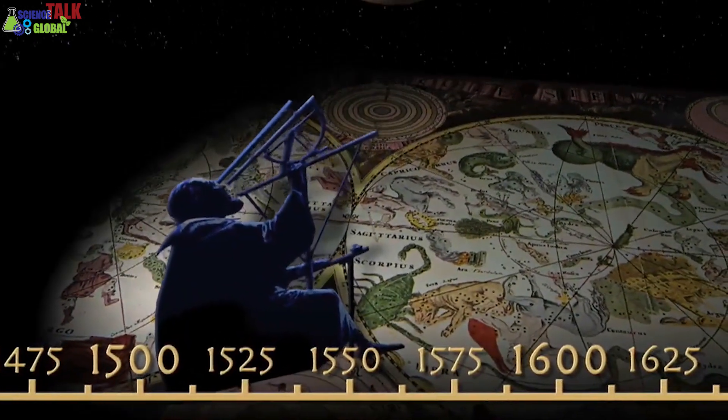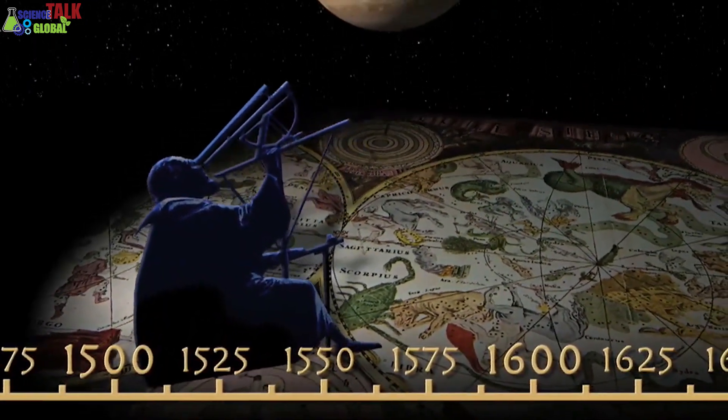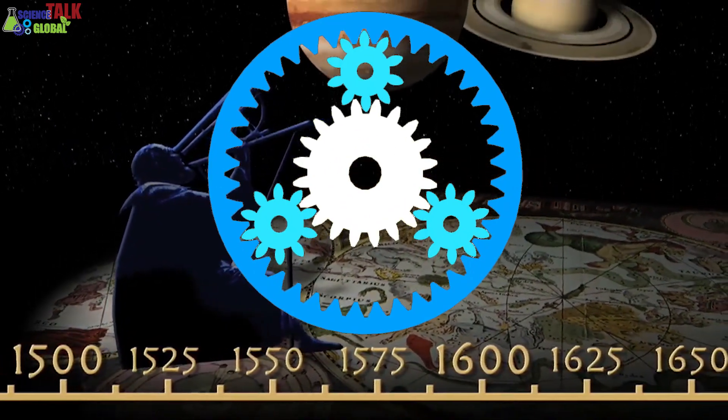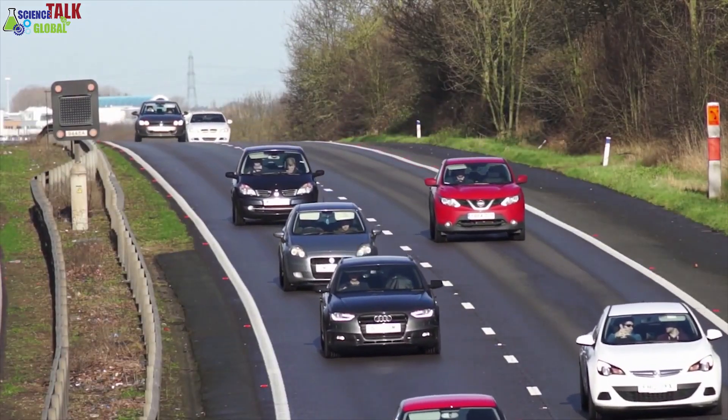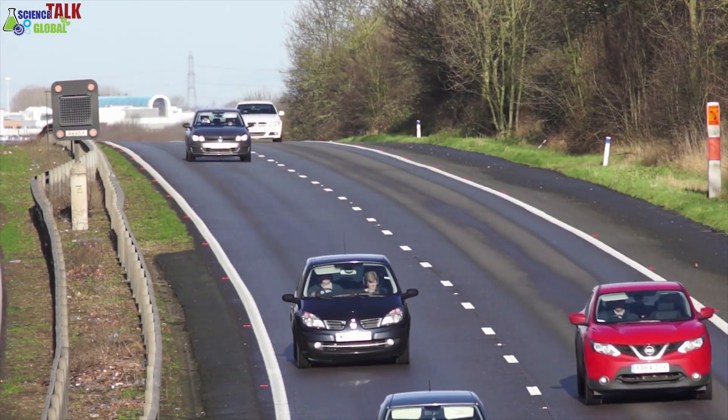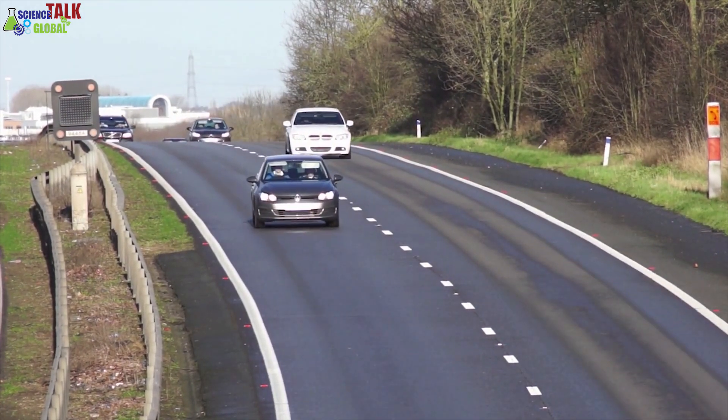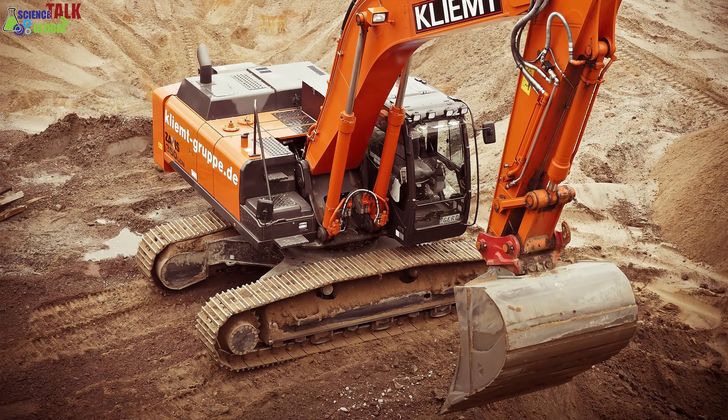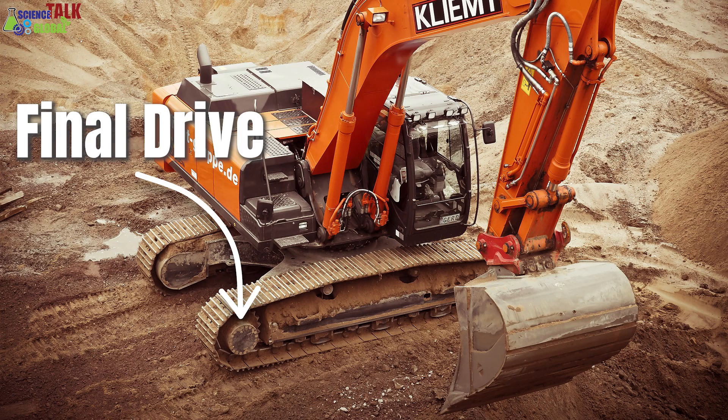The epicyclic gear train is an interesting invention of mechanical engineering. This is called a planetary gear set as well. Most of the auto gear transmissions of automobiles consist of several epicyclic gear trains. Machines that need significantly high gear ratios are also equipped with these gear systems, for example, the final drive of excavators.